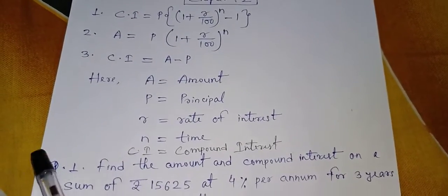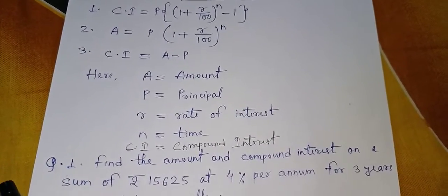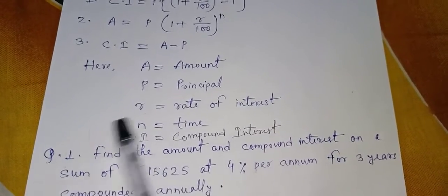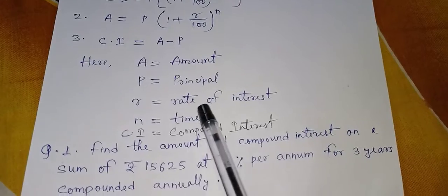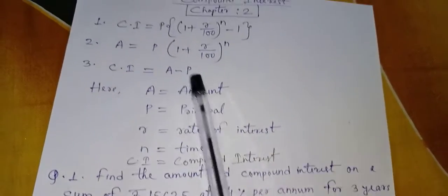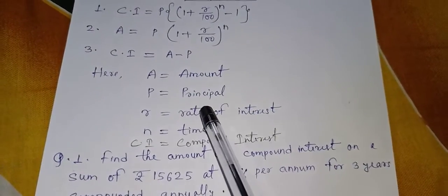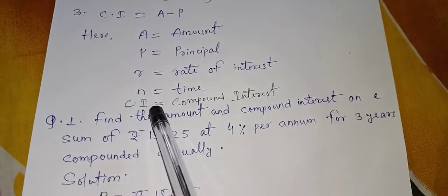Rate means rate of interest. Like for some amount of money, bank will give you some rate of interest in the form of percentage, 5%, 10%. That is rate of interest. And here n means time, like for 2 years, 3 years. That will be called your time.